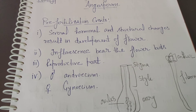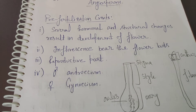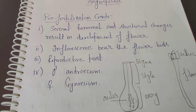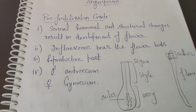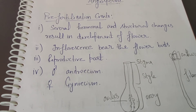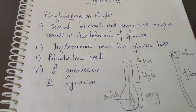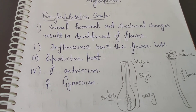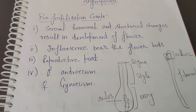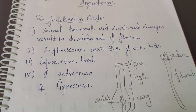What happens in pre-fertilization events? Several hormonal and structural changes result in the development of flowers. Before a flower grows, there are many hormonal and structural changes. The first bud is slowly converted to a flower. The growth and maturity of the plant is due to several hormonal and structural changes. Then the inflorescence bears the flower buds. Inflorescence, as you know, is the arrangement of flowers on a plant.